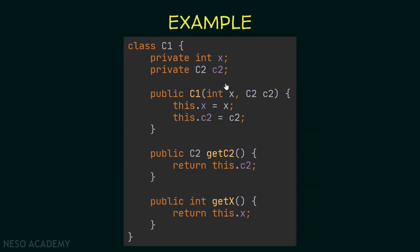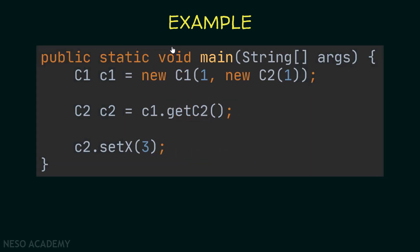Now let's make a small change. I added a getter for the attribute c2 — a method that returns an object of type C2, returning this.c2. Now we have a getter that returns an object, so we need to check if that object is immutable or not. As we said, C2 is not immutable, so the attribute c2 is also not immutable. This getter returns a mutable object, so the third rule is not satisfied — and we say that C1 is not immutable.